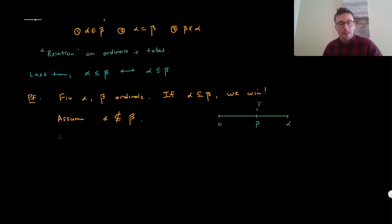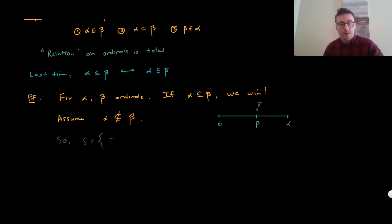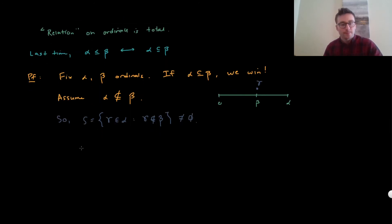Assume alpha is not a subset of beta. So there is some epsilon-least element: let S be the set of all gamma in alpha such that gamma is not an element of beta. This set is not empty, by definition of subset. Since alpha is well-ordered by epsilon, there has to be an epsilon-least element. Fix the epsilon-least element of S, call it gamma.